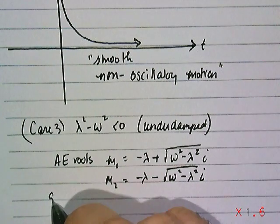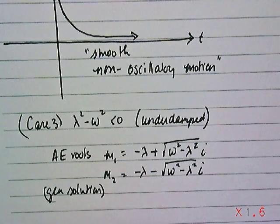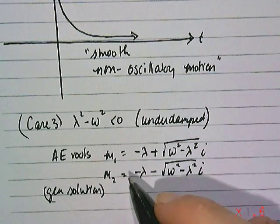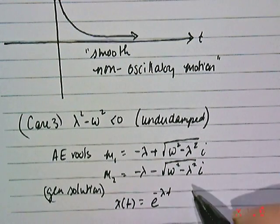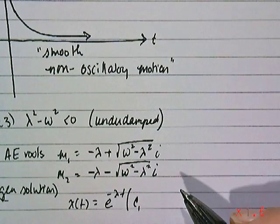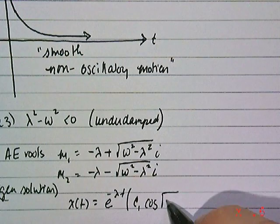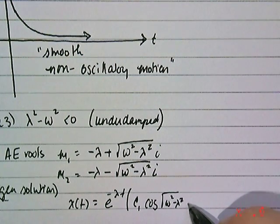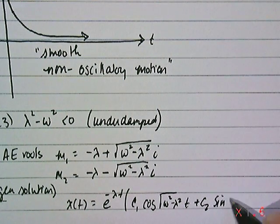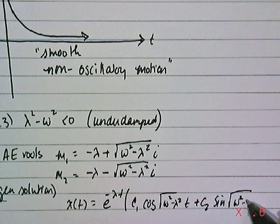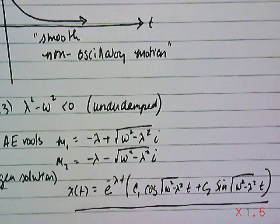Then the general solution - we've seen this for second order constant coefficients, homogeneous case, when you have complex roots, you're going to get a solution in the form e^(-λt) times the quantity c₁cos(√(ω²-λ²)t) plus c₂sin(√(ω²-λ²)t). It's a little bit more complicated just because of the complex roots.